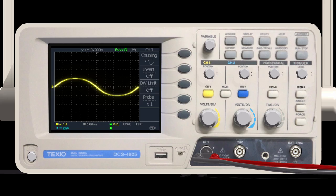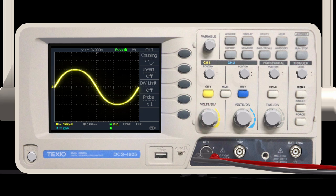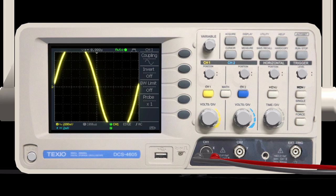If the amplitude on the screen is small, turn this switch to the right. Conversely, if the amplitude is too large and extends beyond the screen, turn the switch to the left.